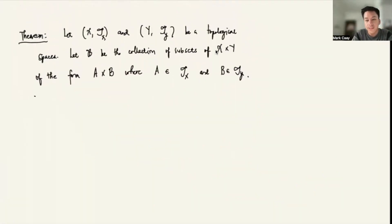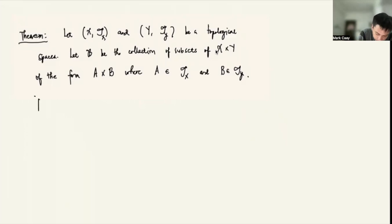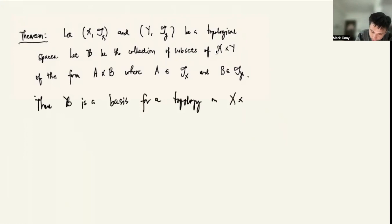Now that we have discussed what a basis script B stands for, we introduce this theorem. Let (X, τ_X) and (Y, τ_Y) be topological spaces. We let B be the collection of subsets of X×Y of the form A×B, where A is in τ_X and B is in τ_Y. Then script B is a basis for a topology on X×Y, and the topology generated by script B is called the product topology.